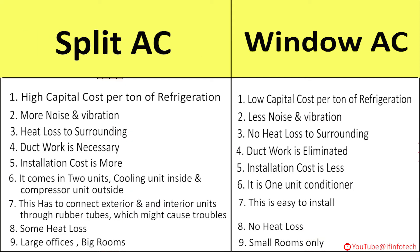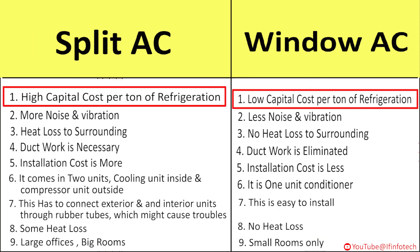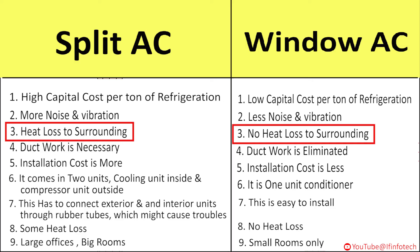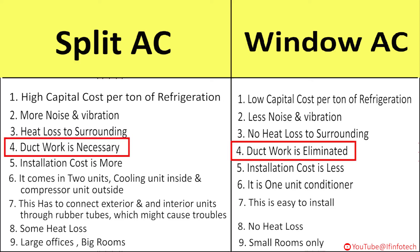In the comparison between split AC and window AC: split AC has a higher capital cost per ton of refrigeration compared to window AC. Noise and vibration in split AC is more compared to window AC. There is heat loss to surroundings in split AC, while there is no heat loss in window AC. Duct work is necessary in split AC, while duct work is eliminated in window AC.